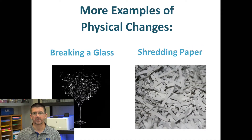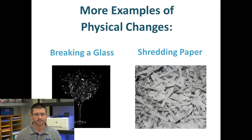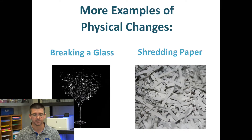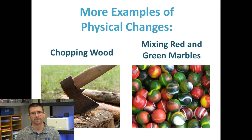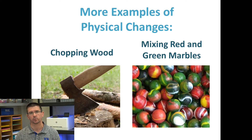Breaking a glass — if we take a glass vase or glass bottle and drop it on the floor, it may break into pieces that we might not even be able to put back together, but those pieces are still glass. Shredding or cutting paper is another example of just changing the shape of something, changing the size of the pieces, but not chemically altering it. Even things like chopping a block of wood, or mixing two different colored marbles, or mixing any substances that don't actually chemically react with one another, are examples of physical changes.